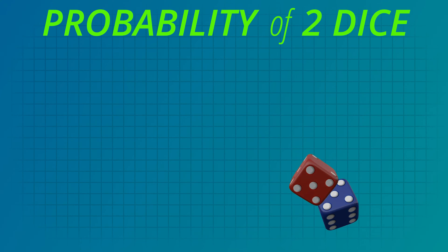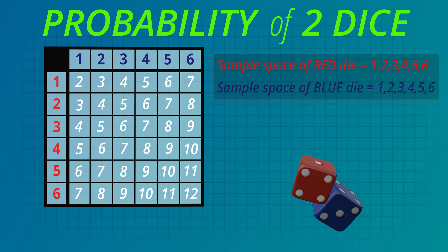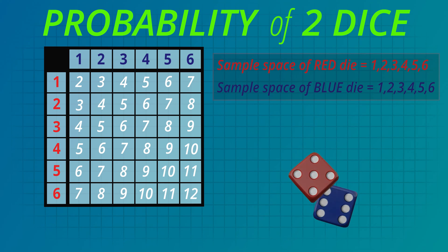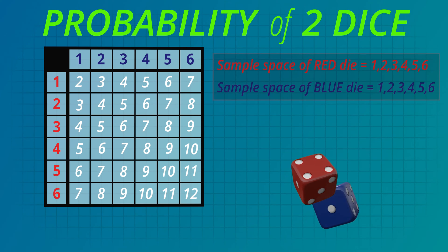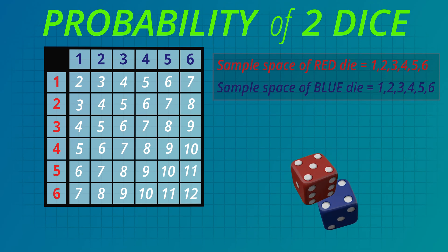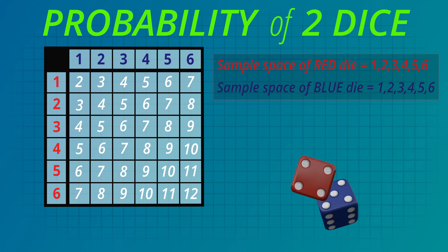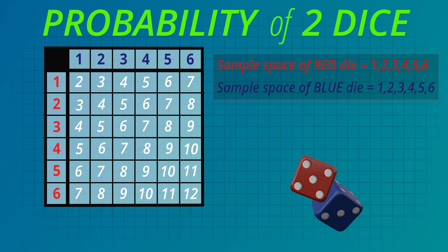Now let's consider the probabilities when two dice are tossed. Let's draw a grid or table to show all the possible outcomes as the totals that the two dice add up to. If we toss the two dice we could get a 1 on the red die and a 1 on the blue die — that's a total of 2. They could land on a 1 on the red die and a 2 on the blue die — that's a total of 3, and so on. The grid shows 6 multiplied by 6, or 36 possible outcomes when two dice are tossed.